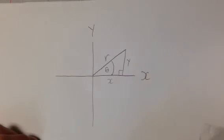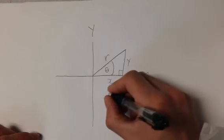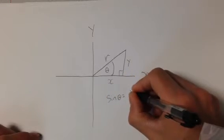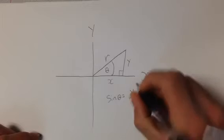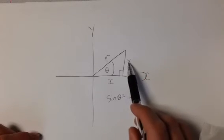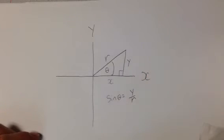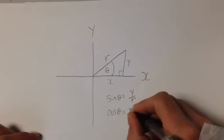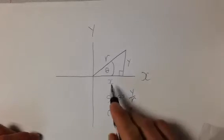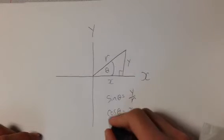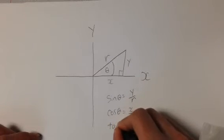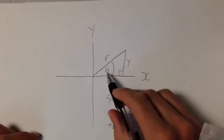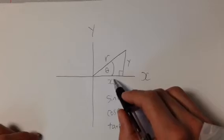We can now redefine our trig ratios. The sine of theta is equal to y over r. y is the opposite side, and r is the hypotenuse. The cosine of theta is x over r, adjacent over hypotenuse. And the tan of theta is y over x. That's our opposite and adjacent.